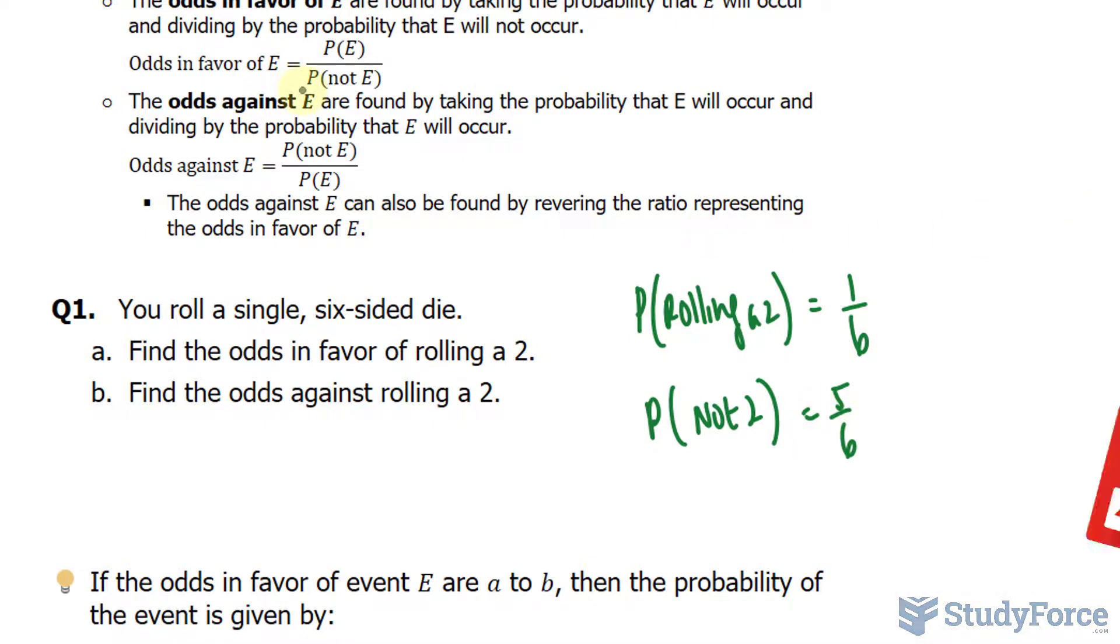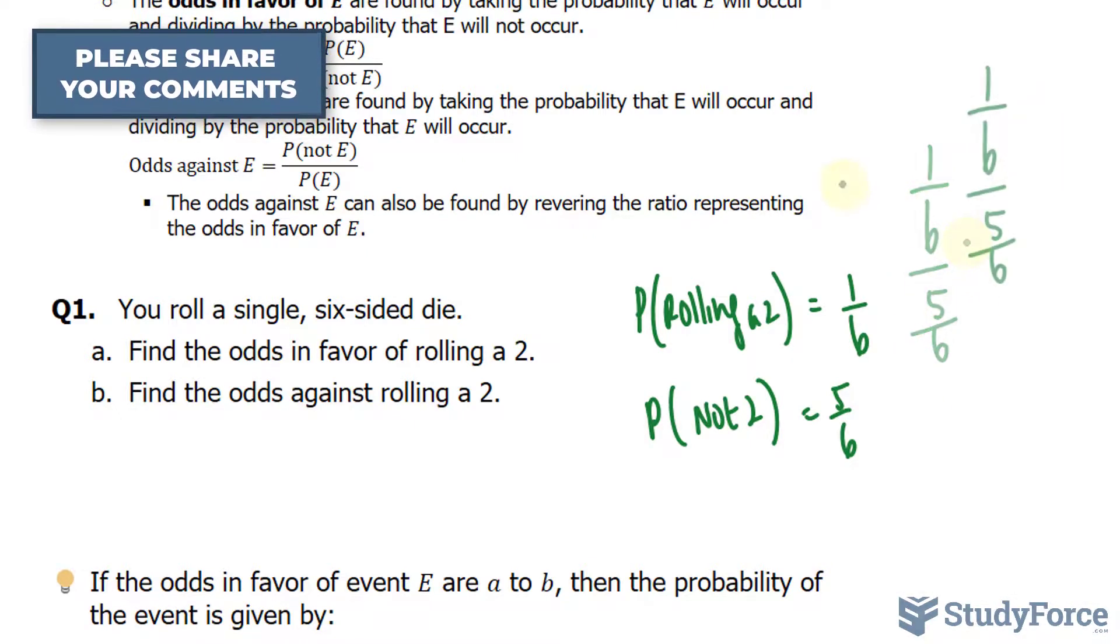Now using the formula that they gave us, they want the odds in favor. So I'll take the probability of the event, 1 over 6, and divide it by 5 over 6. 1 over 6 divided by 5 over 6, and this is the probability of in favor.